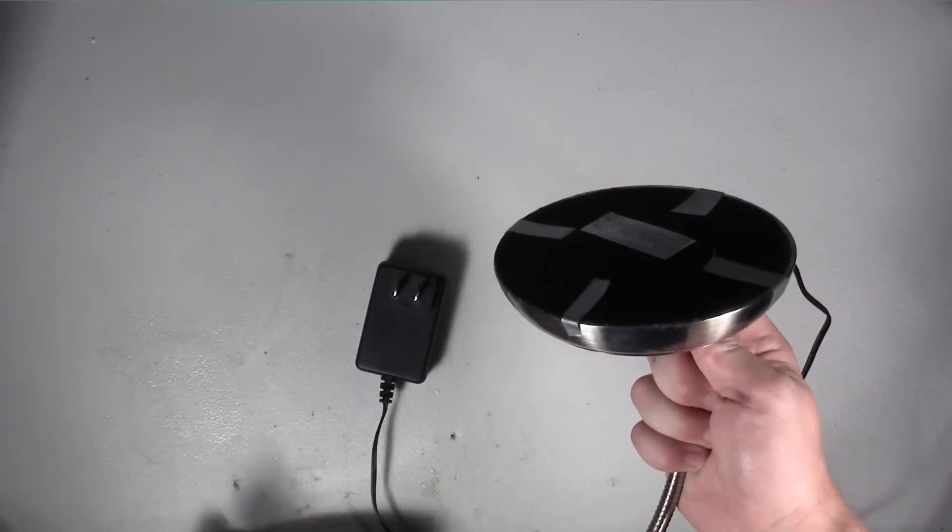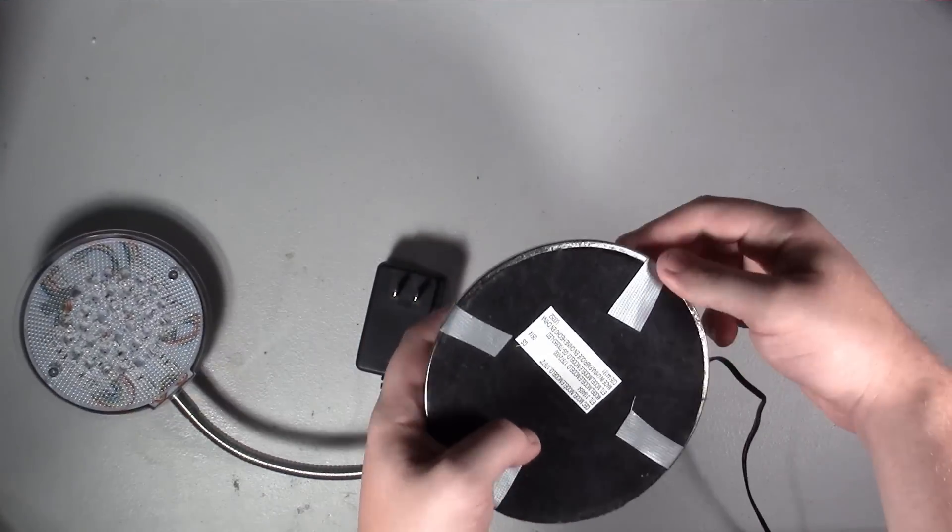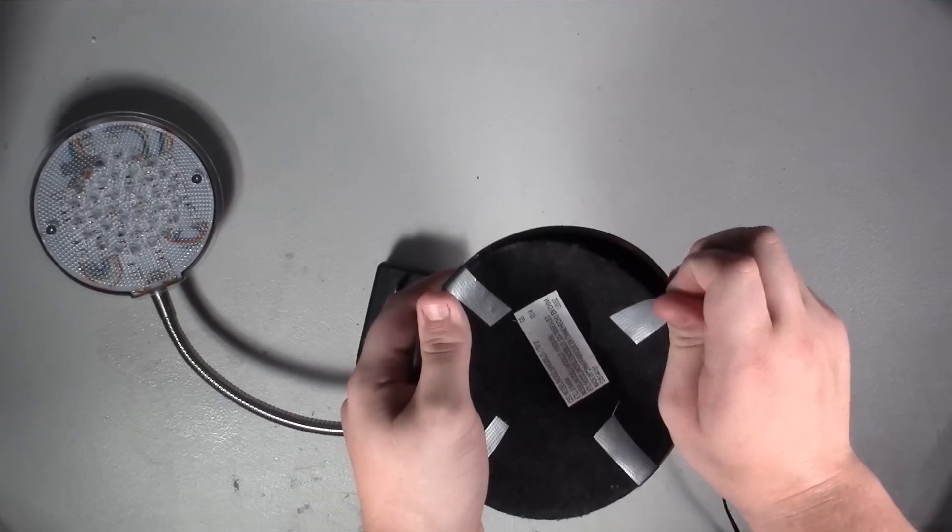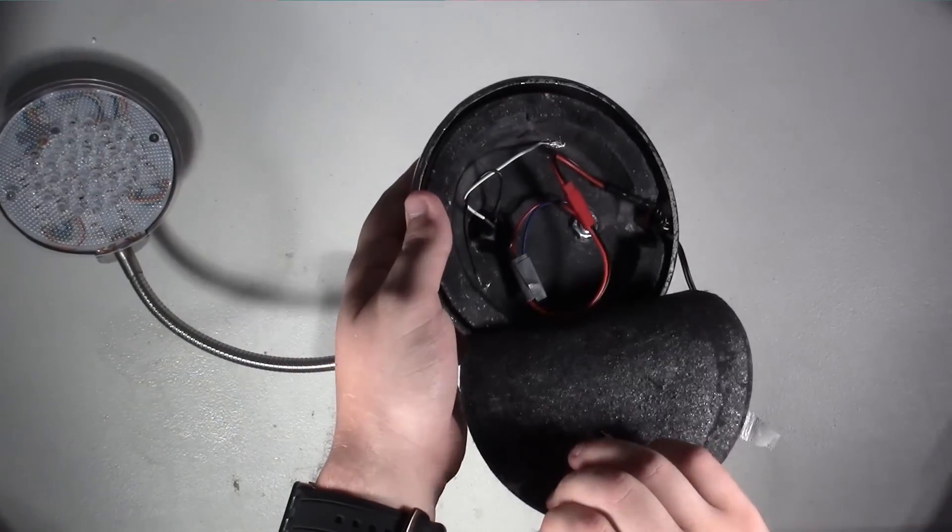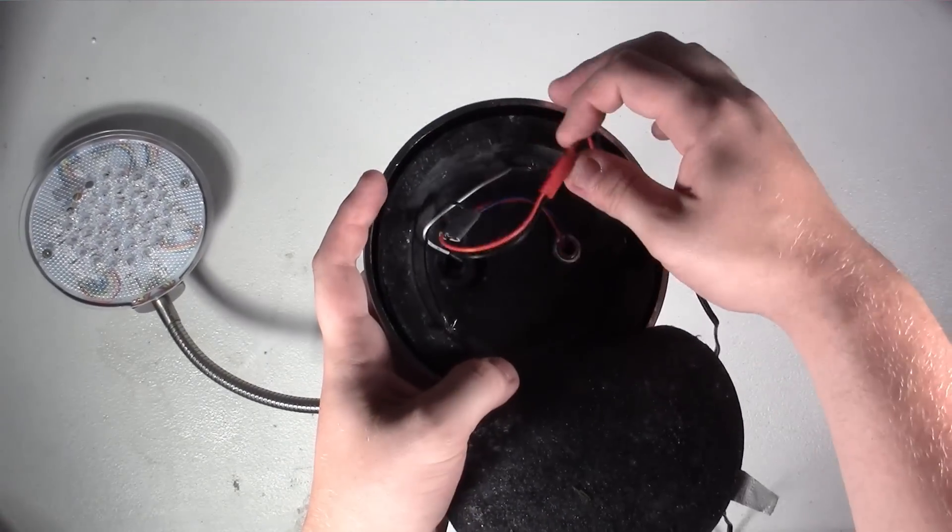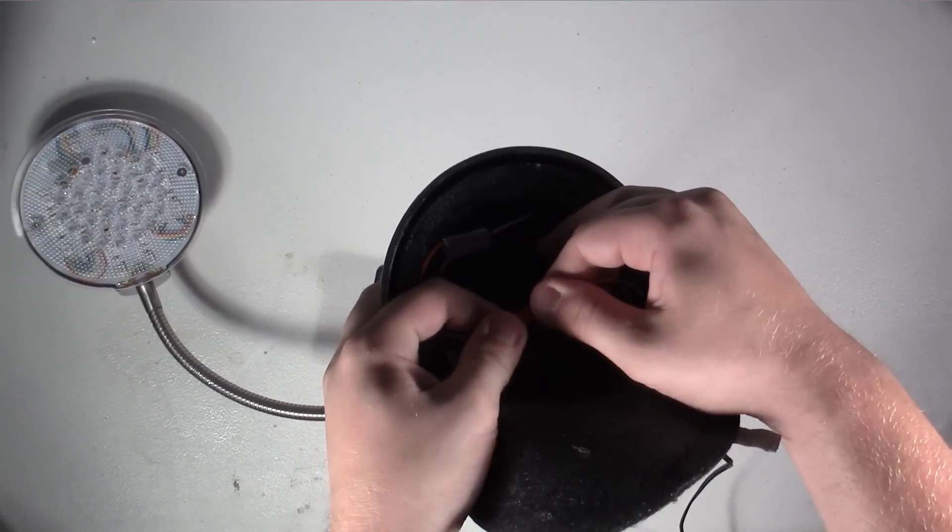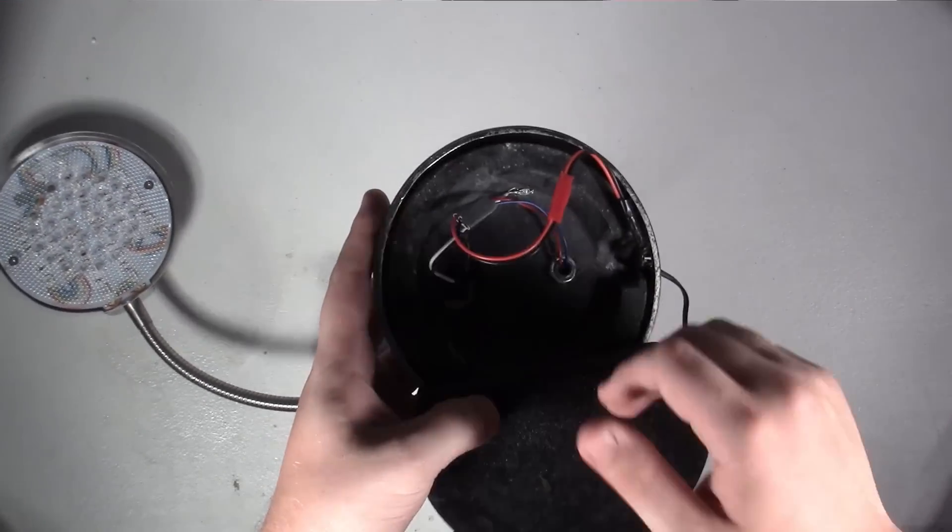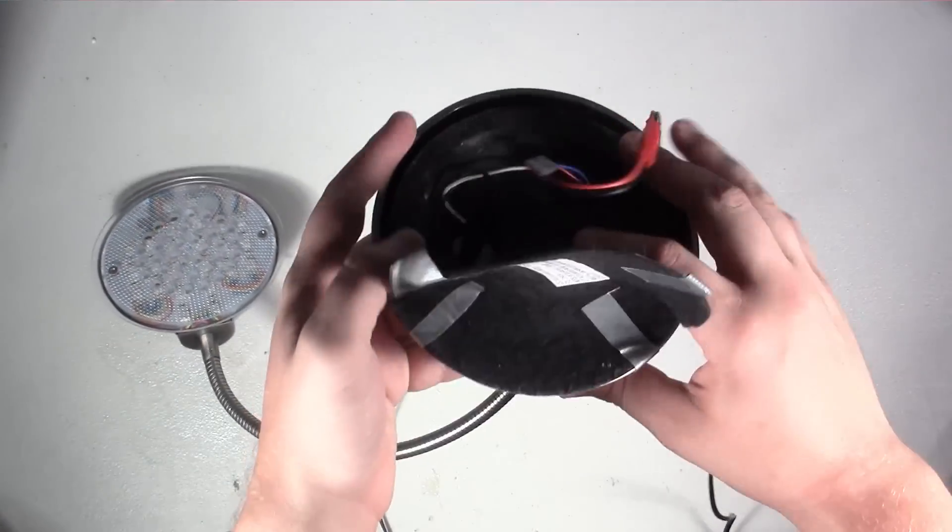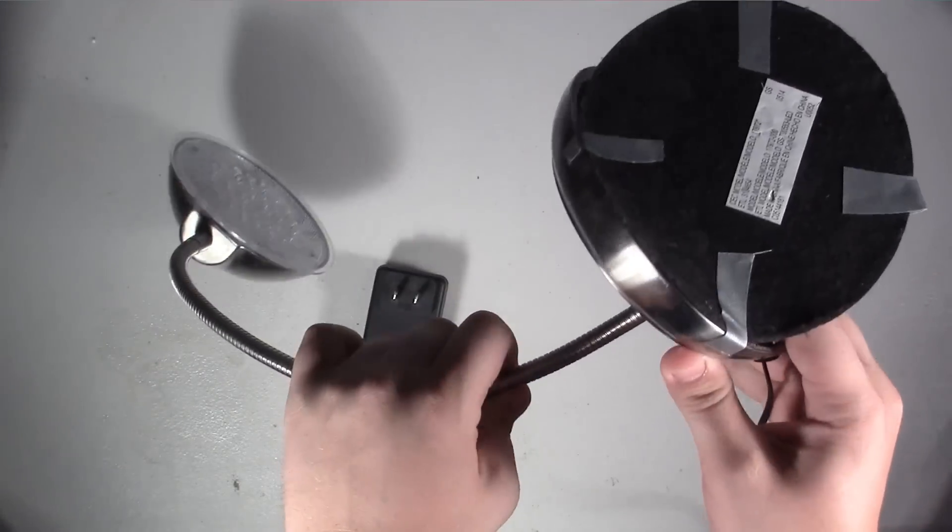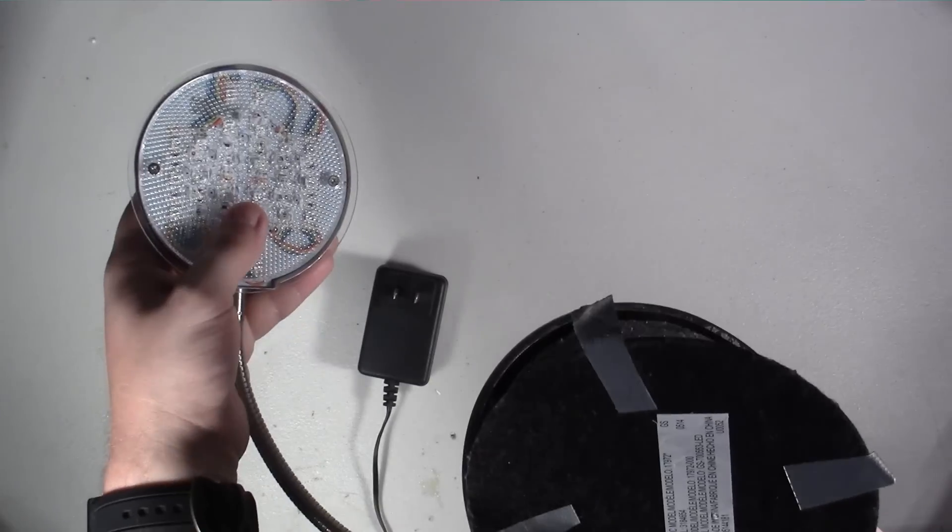Inside on the bottom here, you can see I've just duct taped it together. Inside I've actually just taken this and given it a little quick disconnect here, and then the wire just goes straight up through the column into the top of the light.